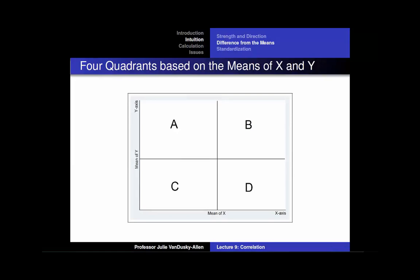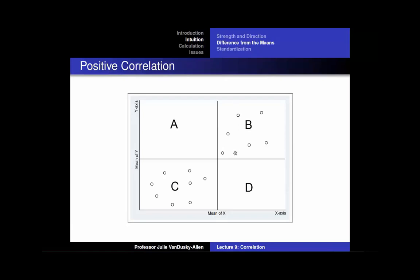I created a series of graphs to demonstrate what this means substantively. Imagine you have a graph with four quadrants. In quadrant A, all observations are below the mean of x and above the mean of y. In quadrant B, all observations are above the mean of both x and y. In quadrant C, all observations are below the mean of both x and y. In quadrant D, all observations are above the mean of x and below the mean of y. When there is a positive relationship between x and y, when an observation is below the mean of x, it is also below the mean of y. And when an observation is above the mean of x, it is above the mean of y.